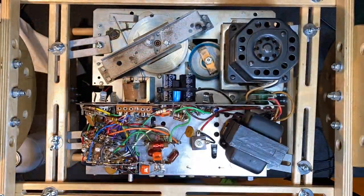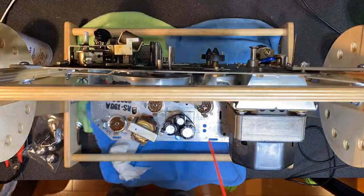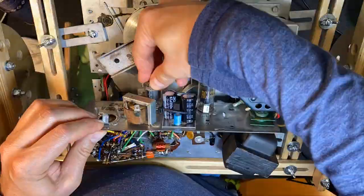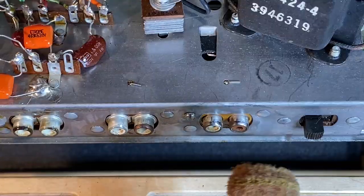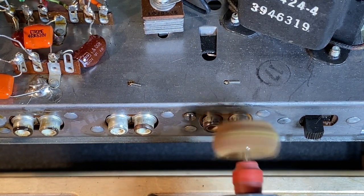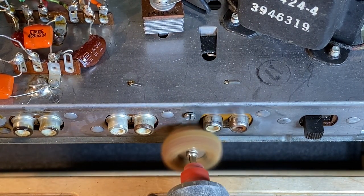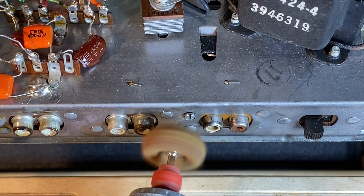Next I sprayed neutral into the volume control and switches, and contact cleaner into the tube sockets. The RCA jacks were badly corroded, so I cleaned them a bit with a Dremel and contact cleaner.